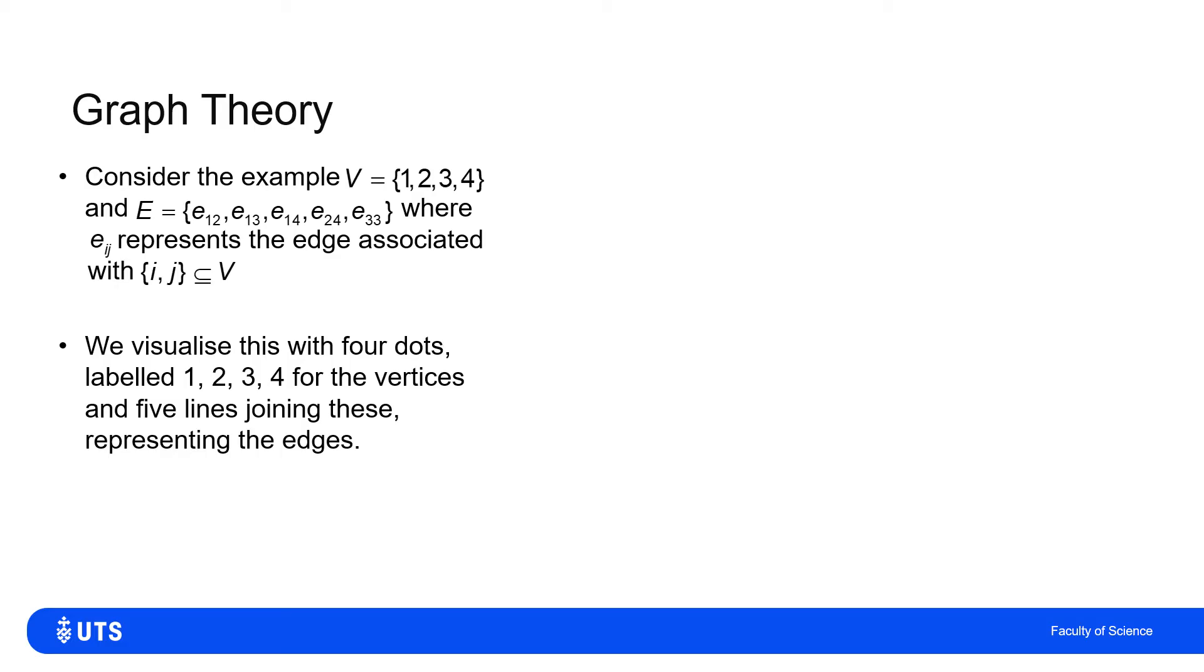and there's five elements in E, so five lines joining these, so five edges. So the fact that I have E1,4 means you've got a line joining node 1 and node 4.